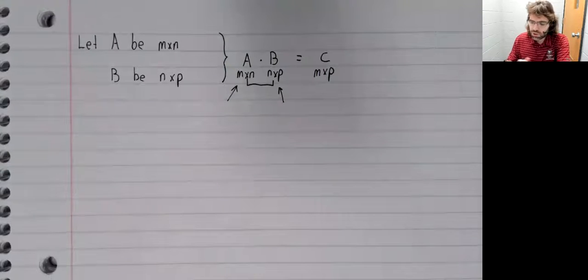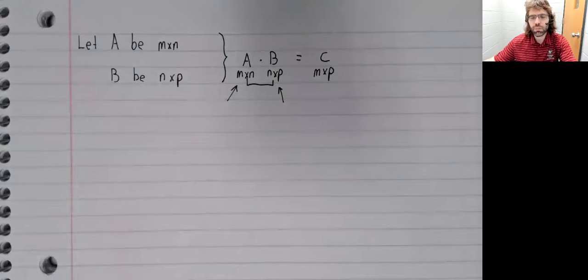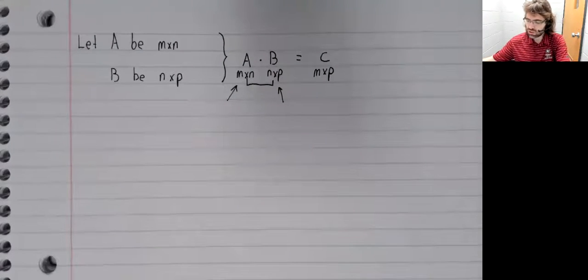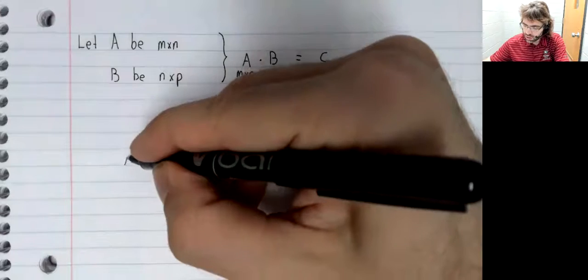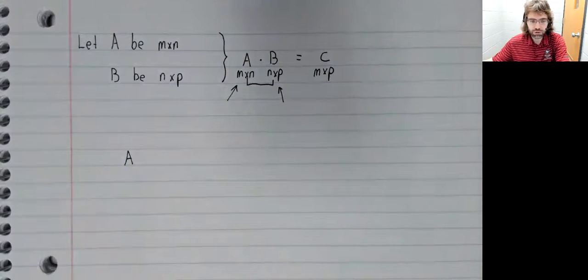How do we define matrix multiplication? We've made the observation that we often think of matrices as being column storage units, or vector storage units. So A is some matrix.